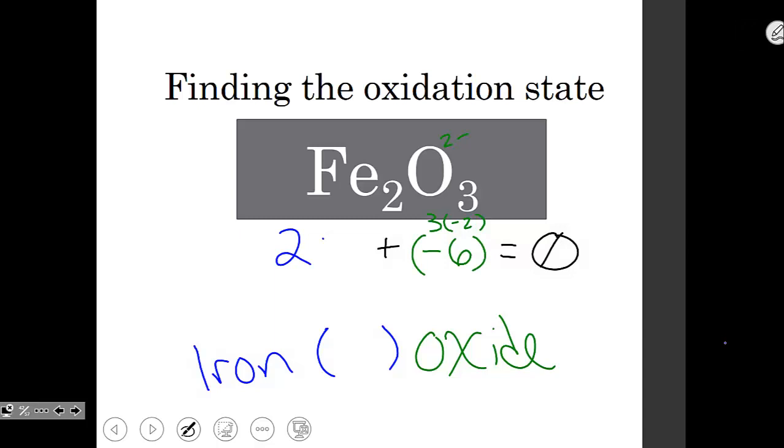There are two irons here that are canceling out that minus six. So two somethings minus six has to equal zero. This must be a plus six. So each iron must be a plus three.